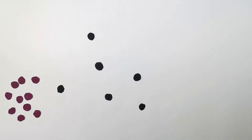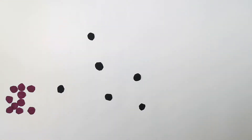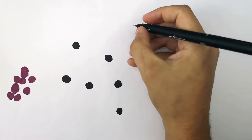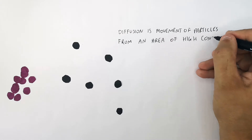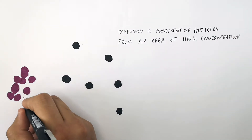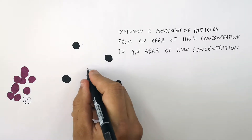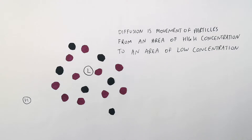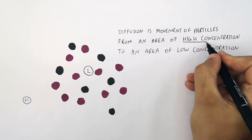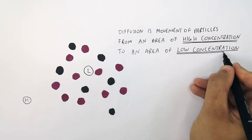The process of diffusion is simply the gradual movement of particles from places where there are lots of them to places where there are fewer of them. Diffusion is the movement of particles from an area of high concentration to an area of low concentration.